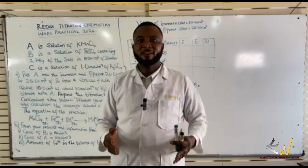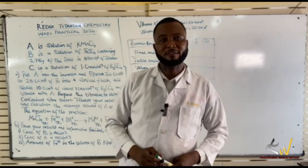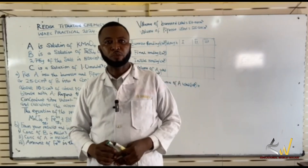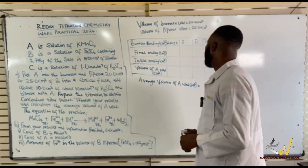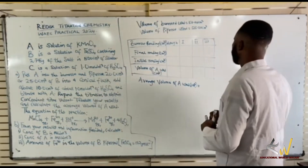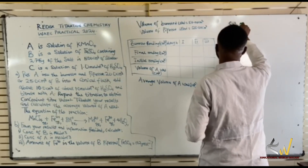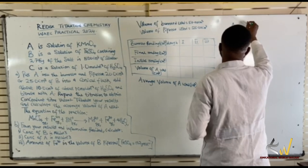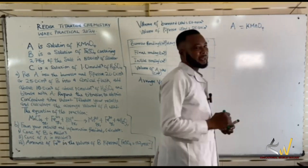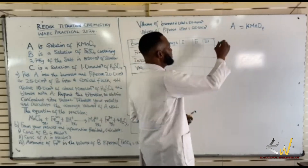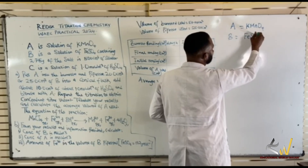Welcome to SELAXE Educational Services. Today we are going to look at redox titration chemistry for WAEC 2024 and the sample. Solution A is potassium permanganate (KMnO4) and solution B is iron(II) sulfate.